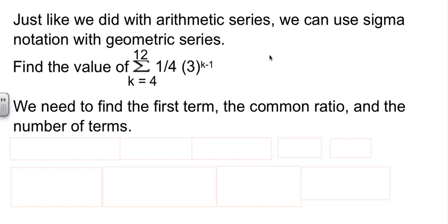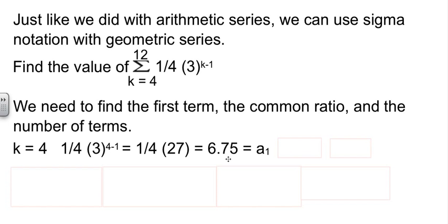And then another parallel that we have from arithmetic sequences is we can use sigma notation with geometric sequences and series. What we need to know is the first term, the common ratio, and the number of terms. The first term is to plug in the 4. So if we plug in the 4 for k and do a little arithmetic, now we know what a1 is.